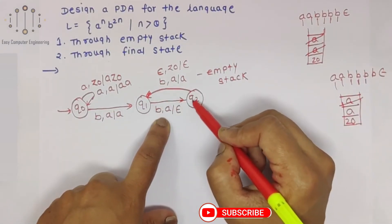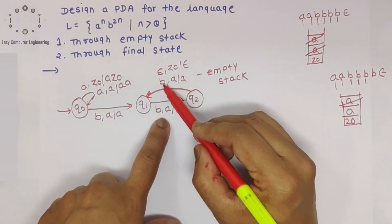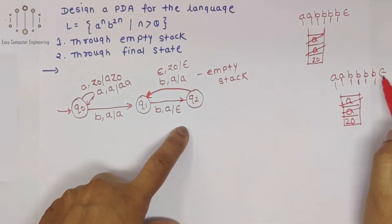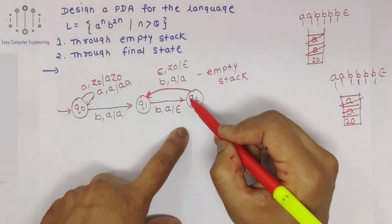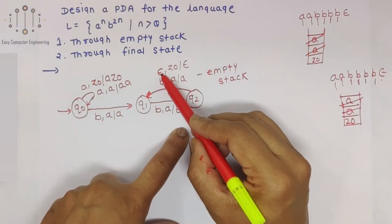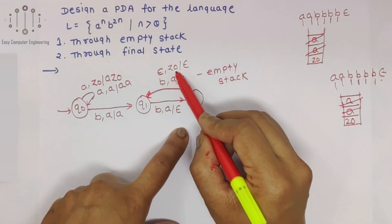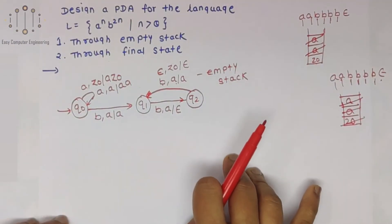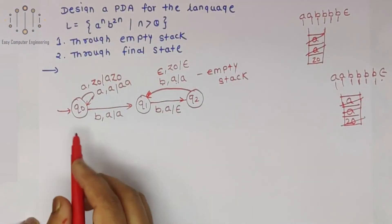Again we are going to use this transition: for incoming B, in stack is A, just read it. For next B, pop it. Now it is epsilon. Now incoming is epsilon, in stack is Z0, so pop that Z0. This is empty stack condition. Now how we can show with the help of final state.